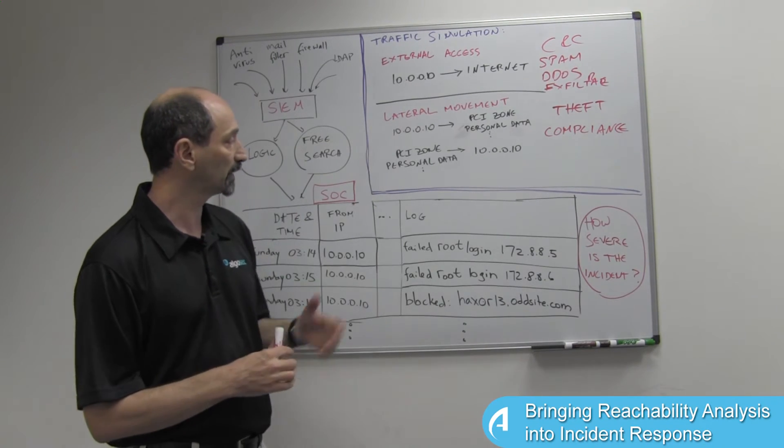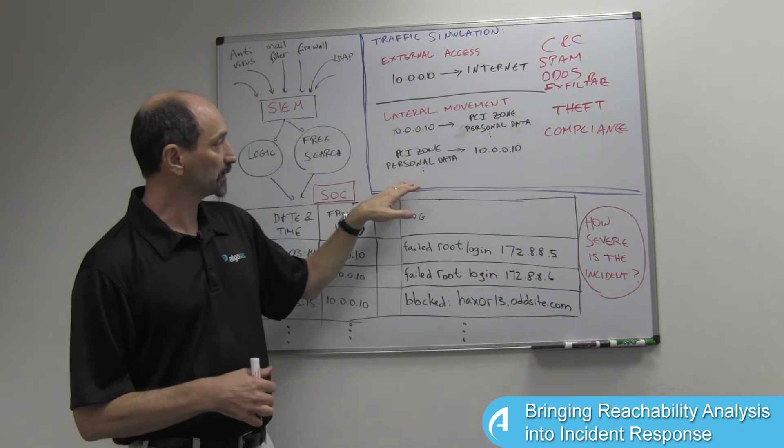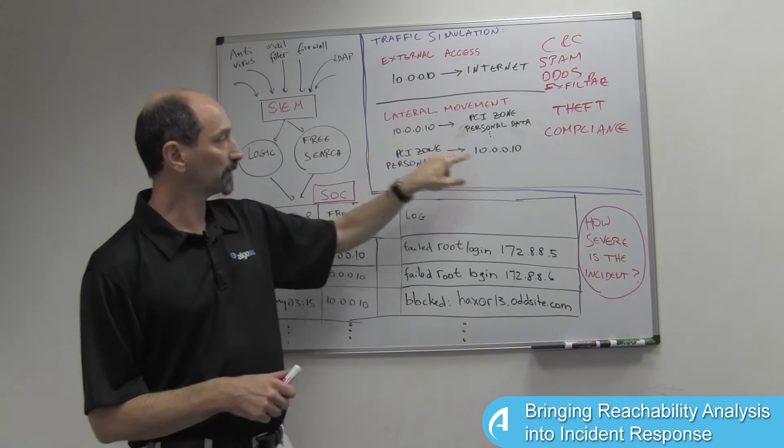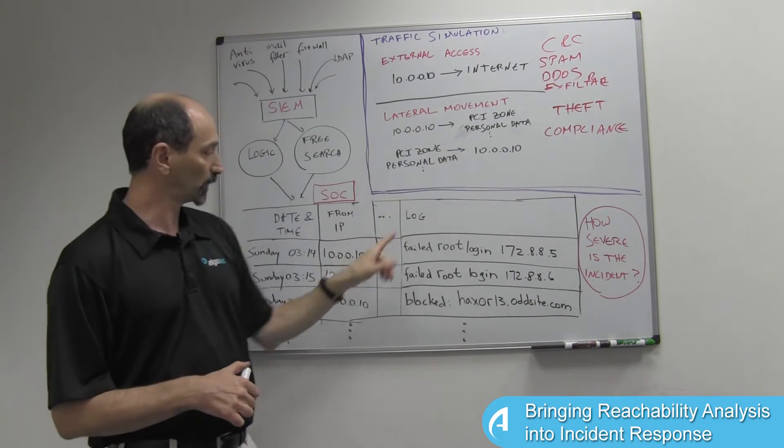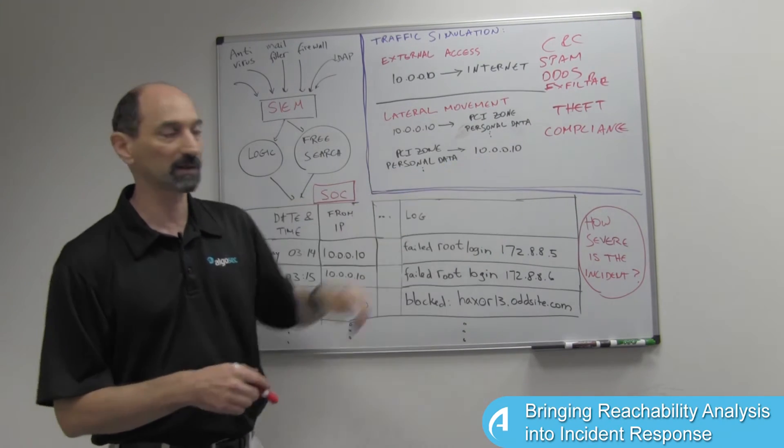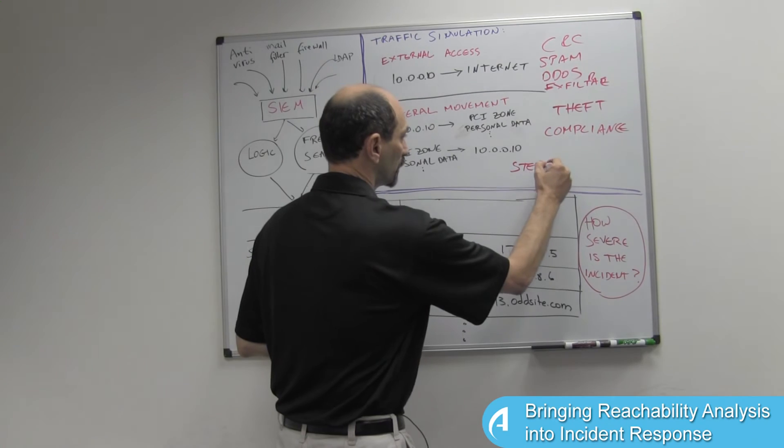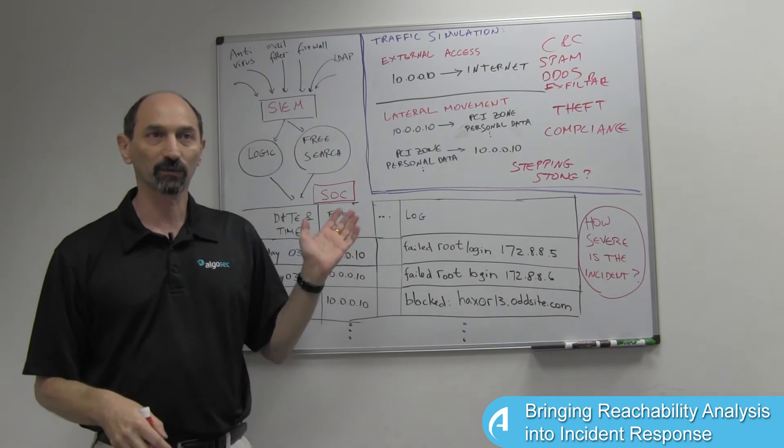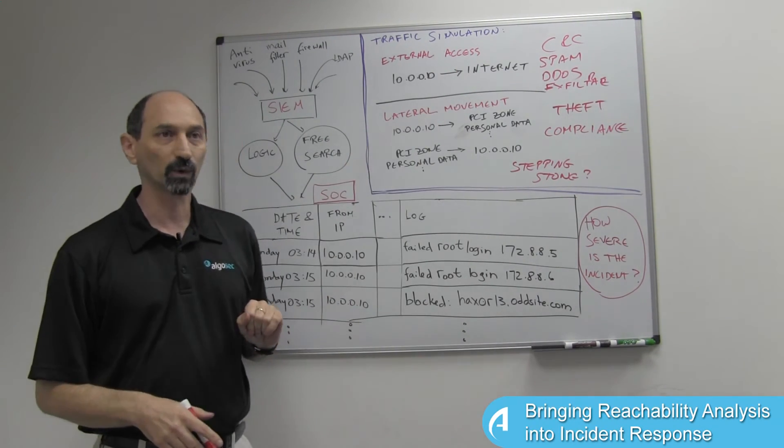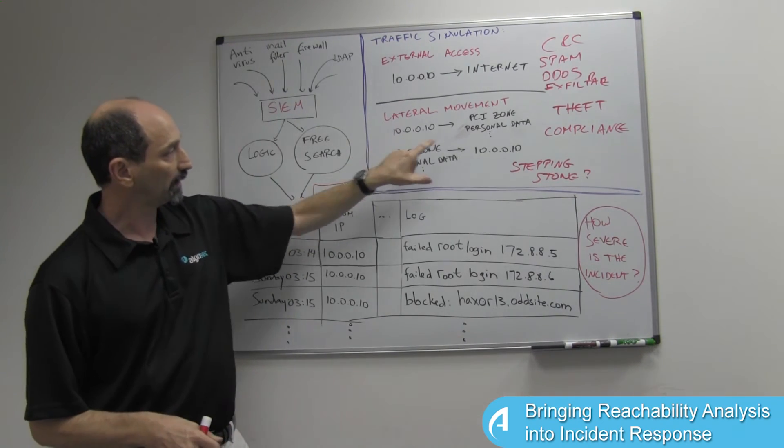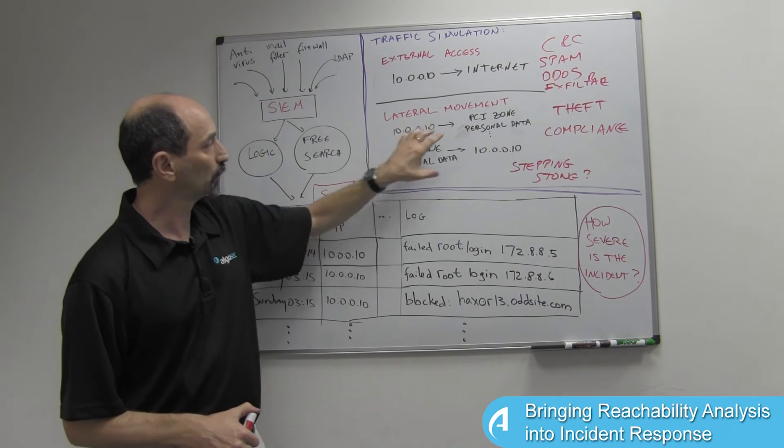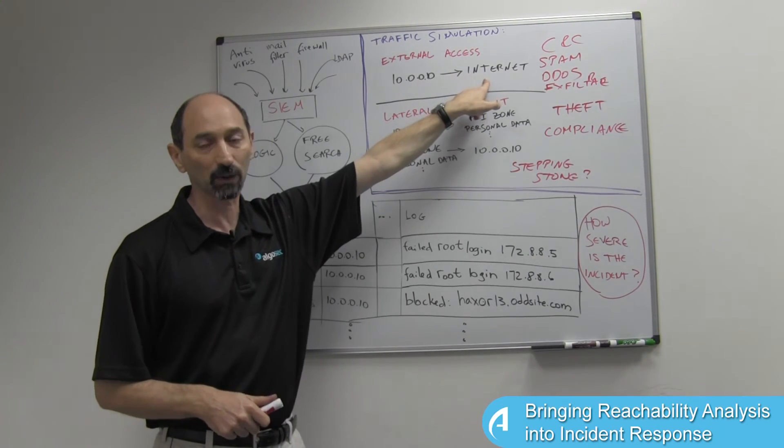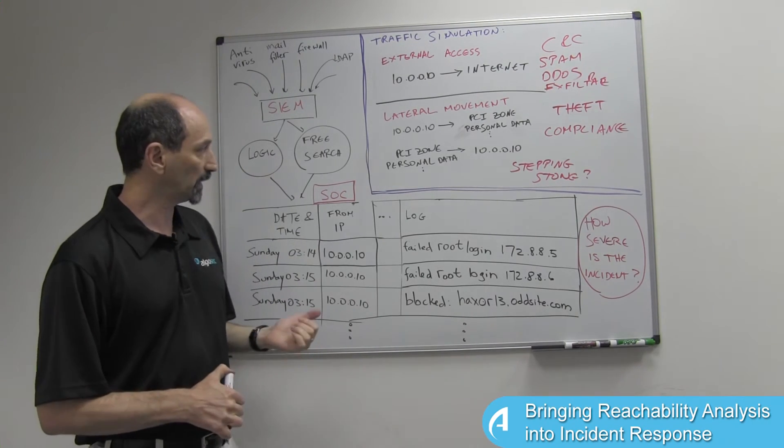The other direction is also as important. If the attacker can take information from these sensitive servers and push them into the server we're looking at right now, then maybe this system can function as a stepping stone for traffic and for sensitive information being exfiltrated out toward the Internet. So a combination of access from a security sensitive area to or from the system that is currently being investigated in combination with broad access outbound would make an even more severe system incident.